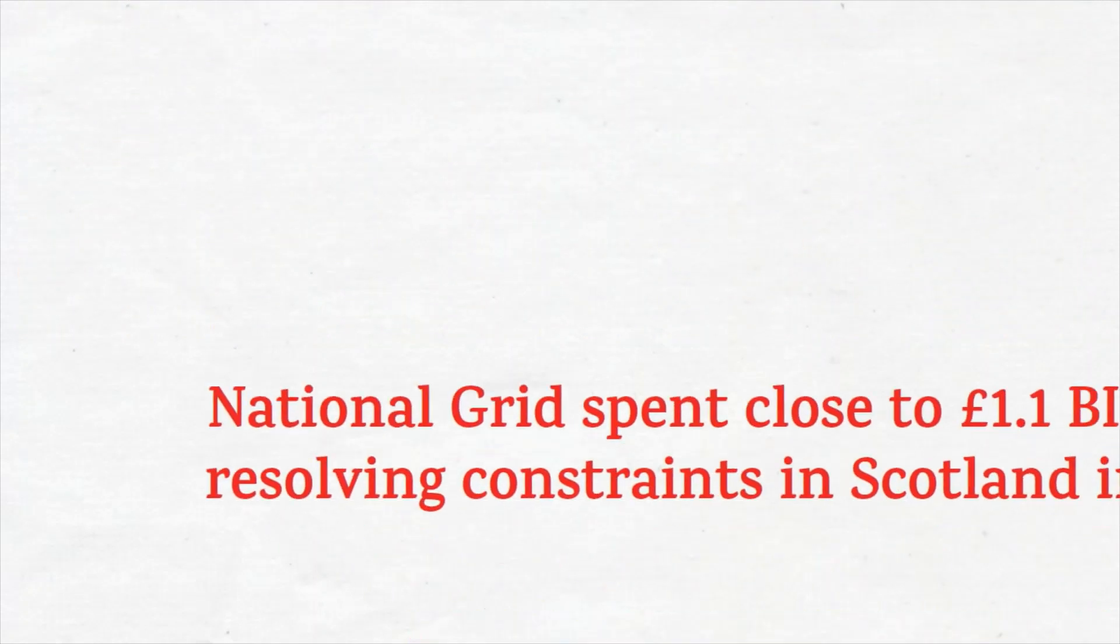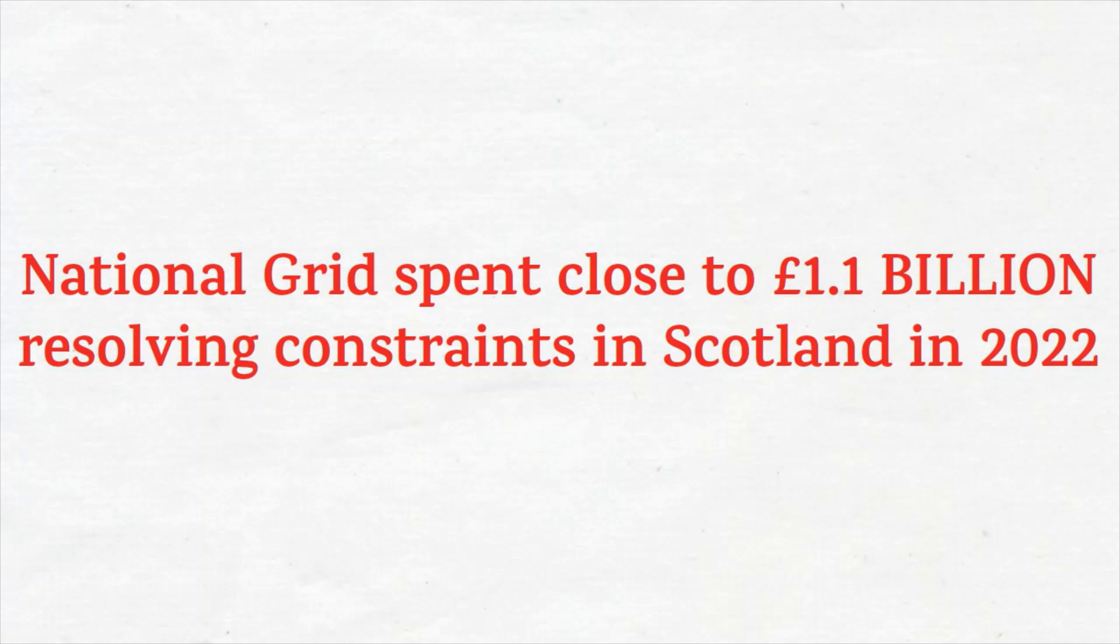National Grid spent close to £1.1 billion resolving constraints in Scotland in 2022 alone. £1.1 billion.